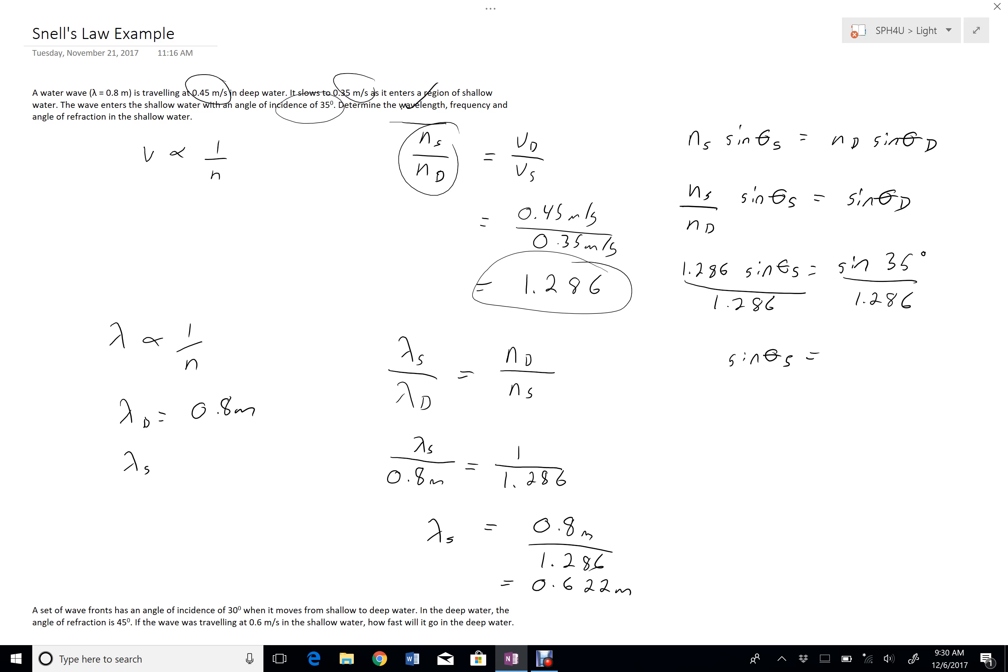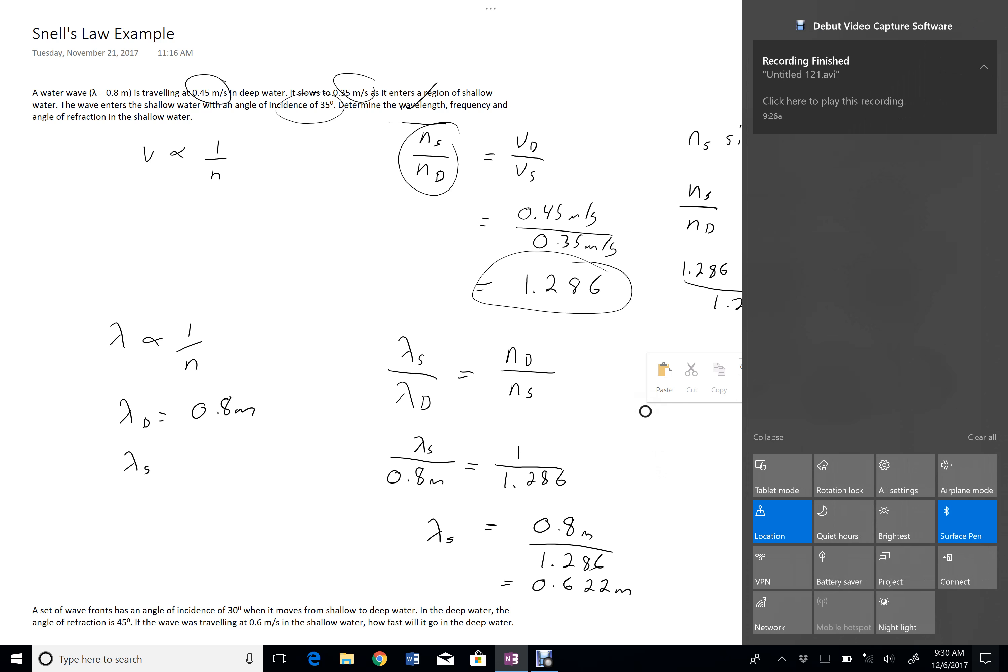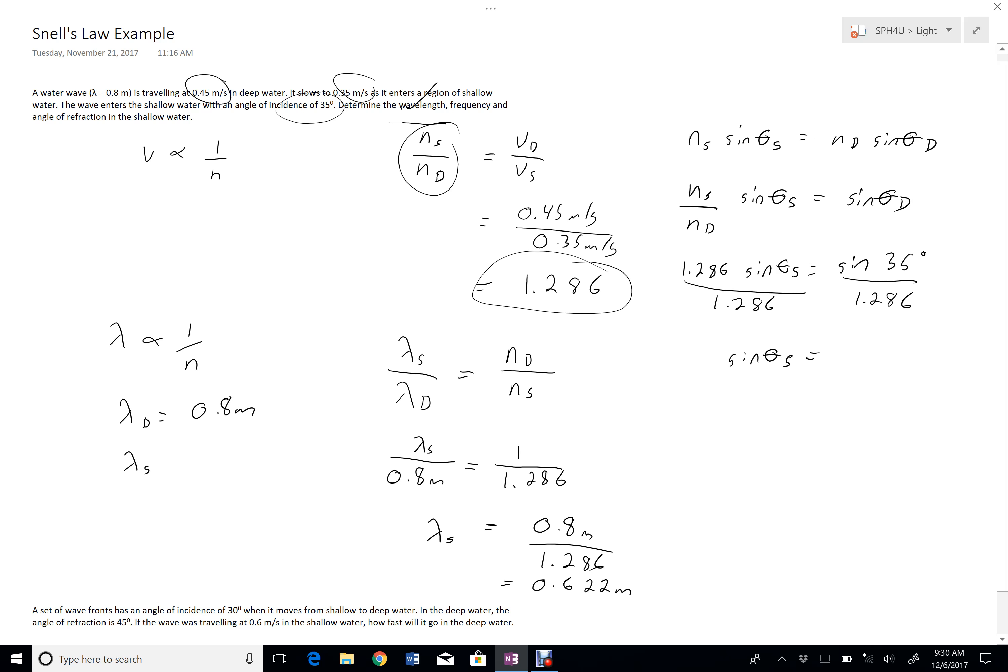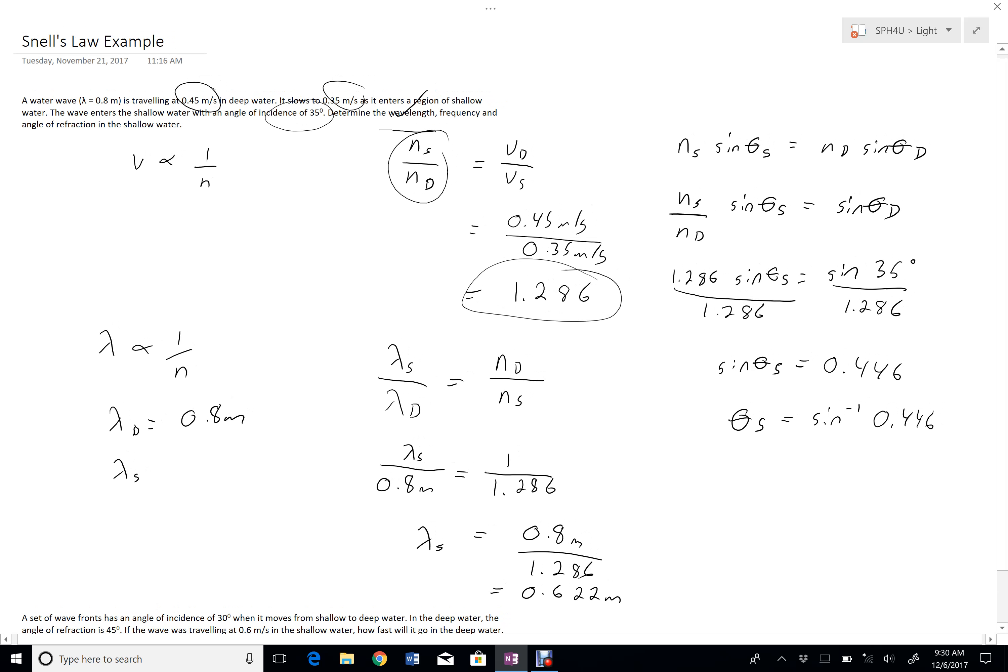So sine theta s is going to be equal to the sine of 35 divided by 1.286. Hit the wrong button. Let me try that again. Sine 35 divided by 1.286. It's 0.446.